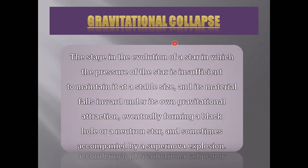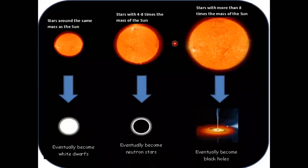What will happen after the gravitational collapse? If the star has mass around the mass of the sun, it will eventually become a white dwarf. It will eventually become a neutron star. A star with more than eight times the mass of the sun will eventually become a black hole.